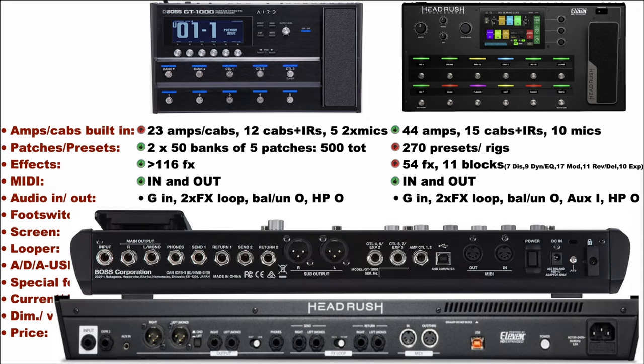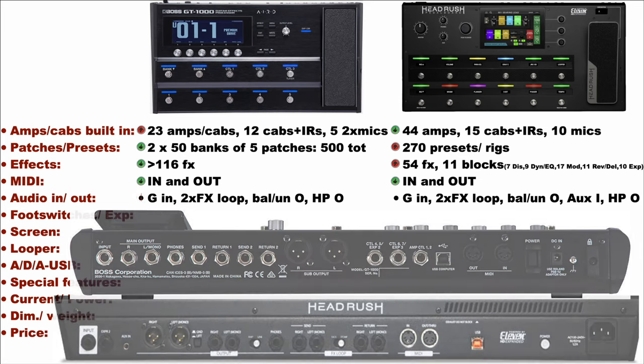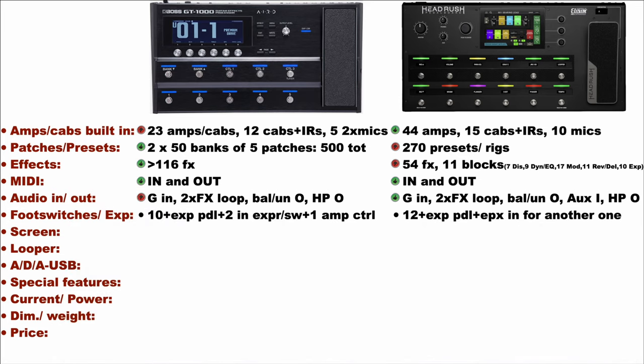Both have the same MIDI capabilities, and nearly the same possibilities as regards inputs and outputs: a mono instrument input, stereo output both balanced and unbalanced, send and return for external effects, and a headphone out. The Headrush has an aux in that the Boss is missing. The Boss has 10 foot switches and a built-in expression pedal, while the Headrush has 12 foot switches also with a built-in expression pedal. The Boss has one more input for external switches or expression pedal, and an amp control out. I would say they are on par.